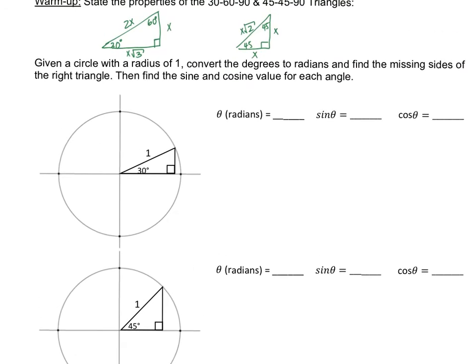What I did was take a circle with a radius of 1. Each of these angles produces a right triangle, and I tell you what the angle is. So you're given the angle, you need to convert it to radians — we're given it in degrees first. Then we're going to find the missing sides of the right triangle, and then find the sine and cosine values. They're first asking us for the angle in radians, so we've learned how to convert angles before.